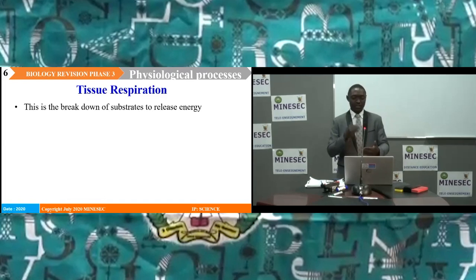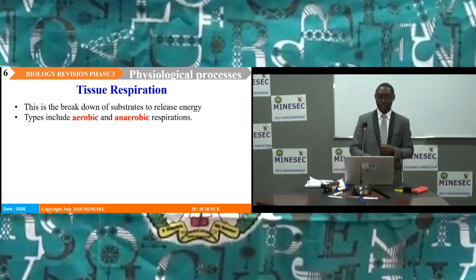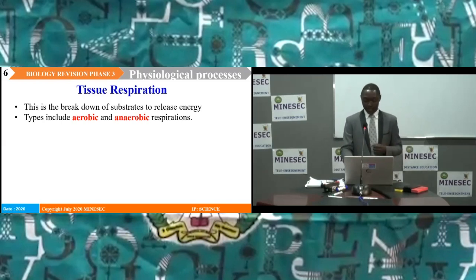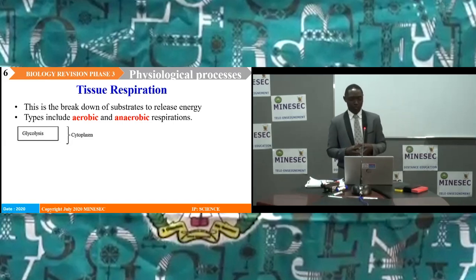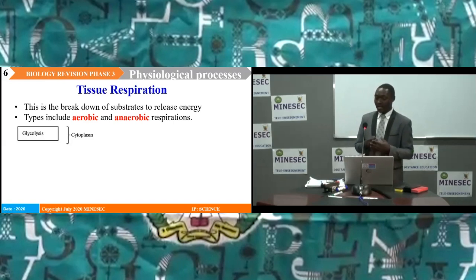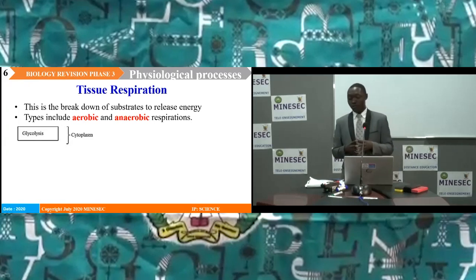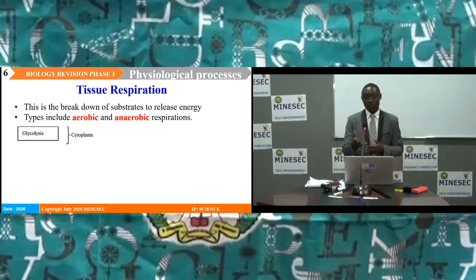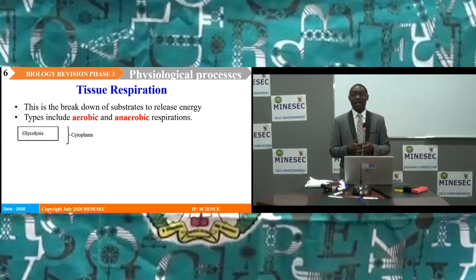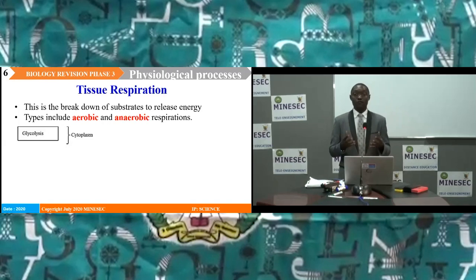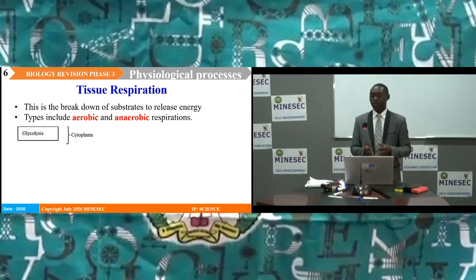Tissue respiration is the breakdown of substrates to release energy. This includes aerobic respiration when oxygen is used, and anaerobic respiration that occurs in the absence of oxygen. In aerobic respiration, the first phase that occurs is called glycolysis, which occurs in the cytoplasm of the cell. Glycolysis is a series of reactions showing the pathway of reactions in the oxidation of glucose. The first step is phosphorylation of glucose, catalyzed by the enzyme hexokinase. The glucose is isomerized to form fructose and later fructose-6-phosphate. This hexose now splits to form two molecules of a three-carbon compound called phosphoglyceraldehyde.